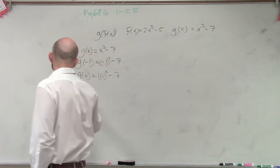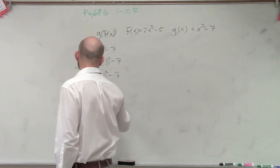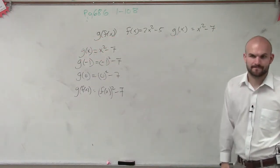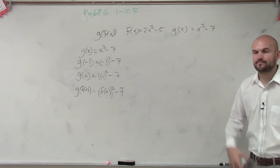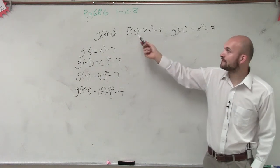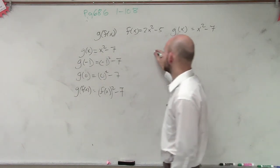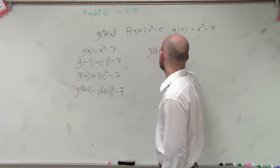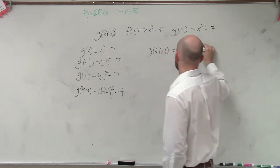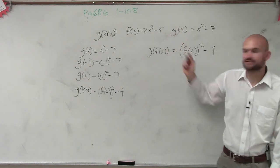So if I say g of f of x, that means I'm now going to put f of x in for x. But the important thing about this is we now have a value for what f of x equals. f of x equals 2x squared minus 5. So let me rewrite this. So g of f of x, which is the question they're asking us, equals f of x squared minus 7. What does f of x equal? f of x equals 2x squared minus 5.